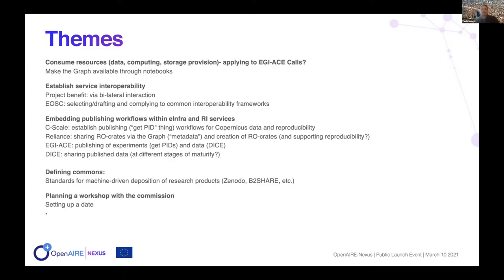The concept is simple: we cannot rely on scientists to manually publish all their results anymore. The results span well beyond publications. In several cases they are produced by machine, in quantities and in relationships that are too hard to cope with at the manual level. We need machinery to keep track of the science we perform, the elements that we produce and use, the services we adopt to transform an input into an output, and all aspects necessary to track science, reward scientists, reproduce and keep track of impact.